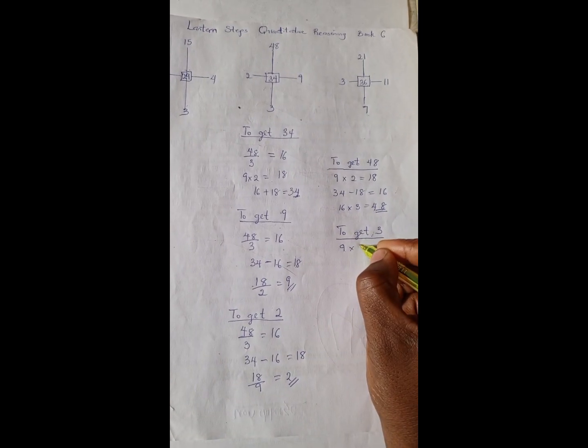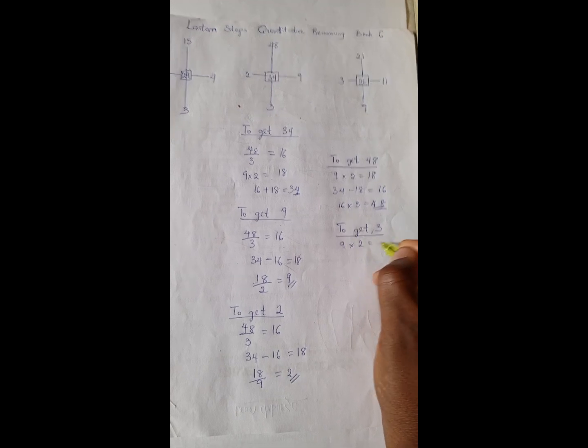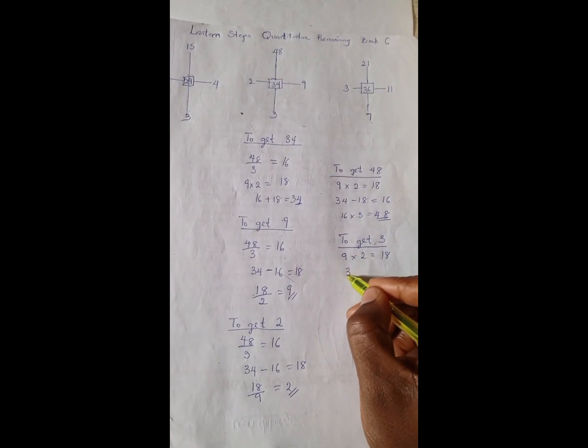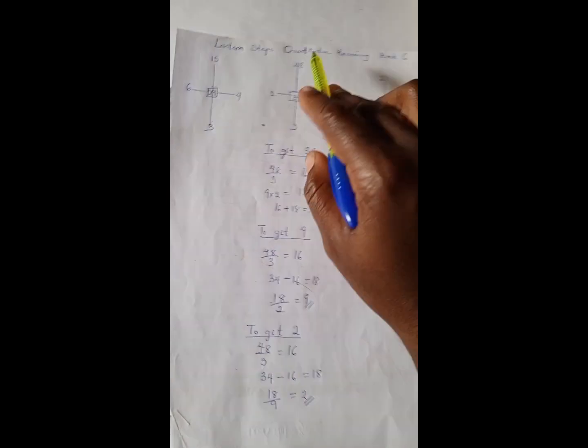times 2 is 18. So 34 minus 18 is 16, and the 48 here divided by 16 is 3.